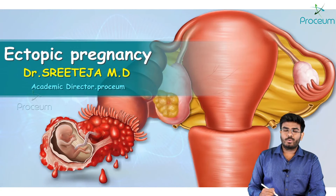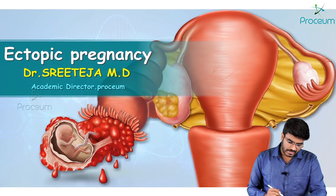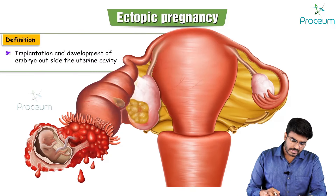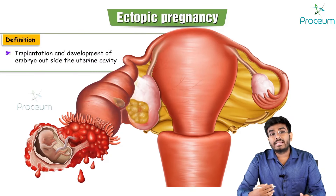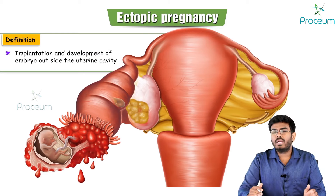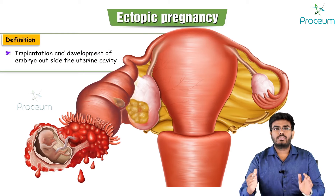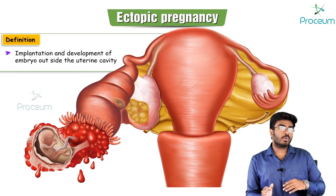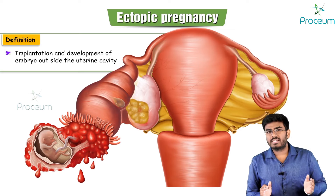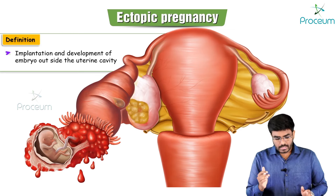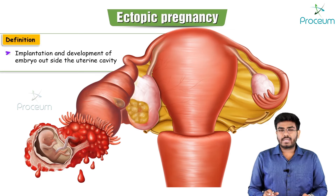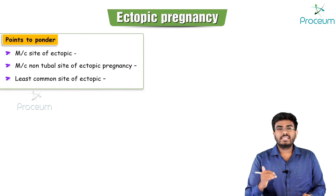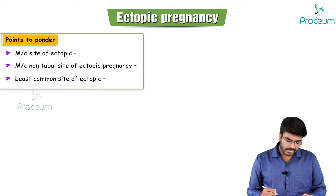In this video, let's discuss ectopic pregnancy. Ectopic pregnancy means implantation and development of an embryo happening outside the uterine cavity. Normally, implantation should happen in the uterine cavity. If the embryo is growing outside the uterine cavity, in an ectopic location, such pregnancies are called ectopic pregnancies.